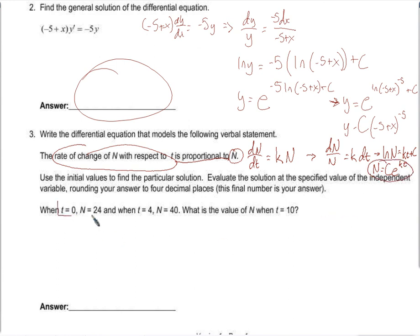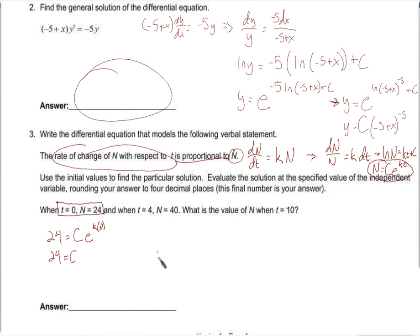They tell us t equals 0 and n is 24. So 24 equals c times e to the k times 0. Since k times 0 is 0 and e to the 0 is 1, we know c equals 24. Now they also tell us n is 40 at t equals 4, so 40 equals 24 times e to the 4k.